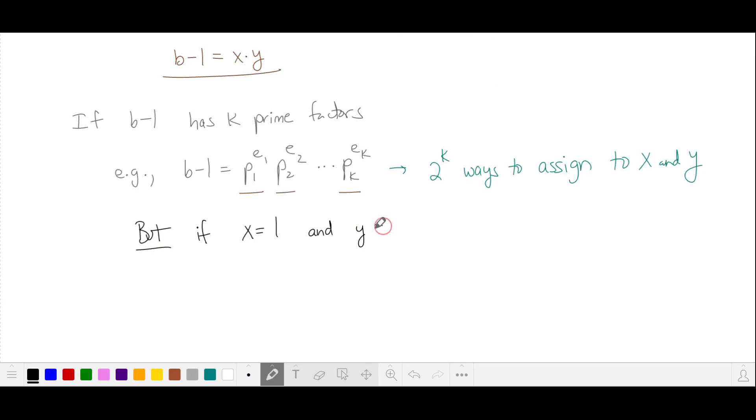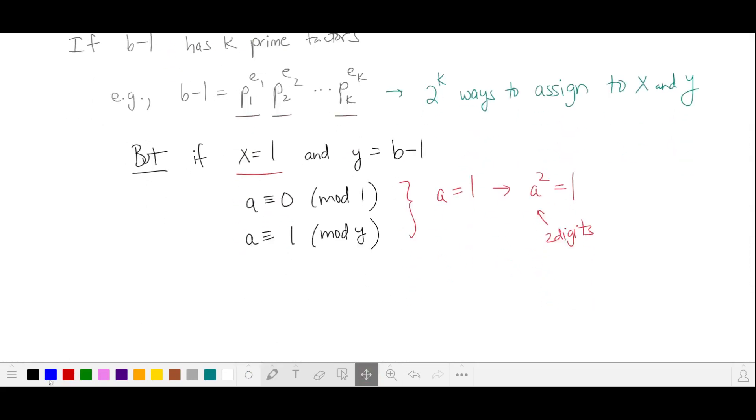then we're going to have a is 0 in mod 1 and a is 1 in mod y. This gives us a solution a is equal to 1, which means a squared is equal to 1, but this needs to be two digits. So we're not going to have a valid solution if we assign all our primes to one of the numbers.